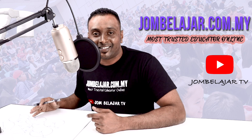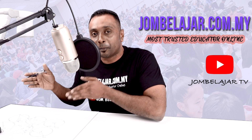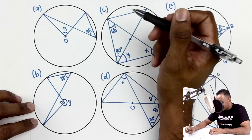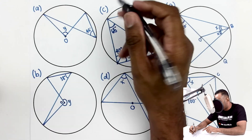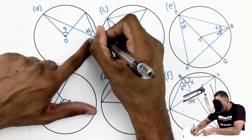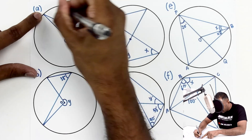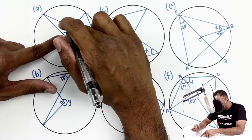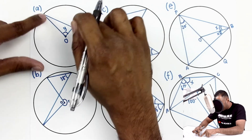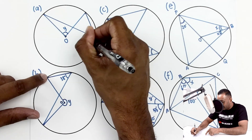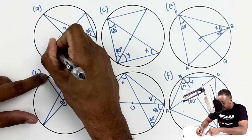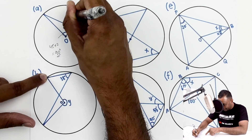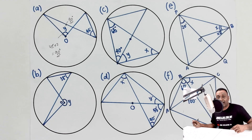Okay pelajar, ini adalah enam soalan yang Cikgu bagi kamu dalam video sebelum ini. Let's start with question number 1A. In this question, they give you 45 degrees. This angle starts from two points and another angle ends at the center — so the arc length and the angle at the center are related. This means if the circumference angle is 45°, the central angle y must be 2 × 45 = 90 degrees. So y = 90 degrees.